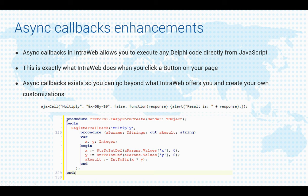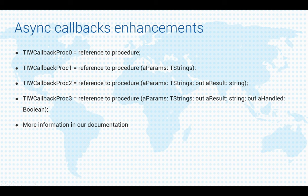Another area with enhancements is async callbacks. Using async callbacks in IntraWeb you can execute any Delphi code from your IntraWeb app directly from JavaScript. This is exactly what IntraWeb does when you click a button on your page — JavaScript on the browser side triggers particular code on the server side. This is useful when you want to extend what IntraWeb offers, develop your own controls, or integrate with any third-party JavaScript library. The example on screen shows a JavaScript call that will execute the multiply procedure on the server side. Previously we had only one method signature, and now we have four different ones, giving you more possibilities.